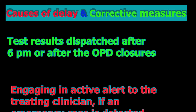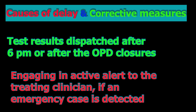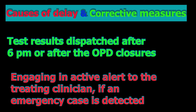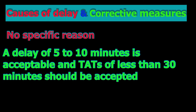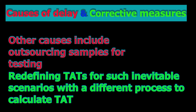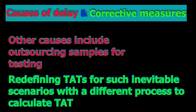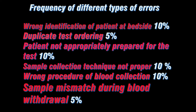Pneumatic tubes help reduce transport time from different wards, but being costly, they may not be feasible for all hospitals. After the sample reaches the lab from the ward or phlebotomy center, patient details are entered into the system. Employing a Laboratory Information System (LIS) can be time-saving for this process.